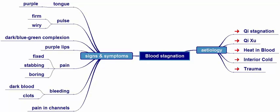Trauma can cause blood to stagnate through blood loss, as this will affect the flow of qi. From the saying: qi moves blood and blood tells qi where to move. Therefore, with less blood, the flow of qi will be affected, which in turn will affect the smooth flow and movement of blood. Trauma can also lead to blood stagnation through the body's natural process of clotting in response to a trauma that has resulted in bleeding.